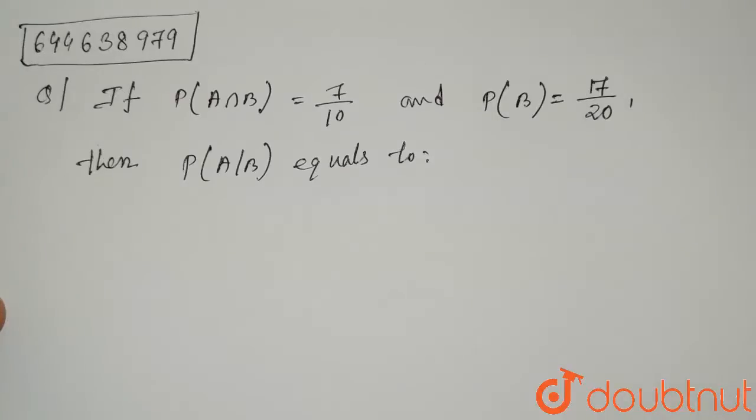Hello everyone, the question is: if P of A intersection B is 7 divided by 10 and P of B equals 17 by 20, then P of A given B equals to?